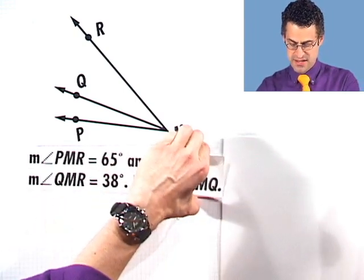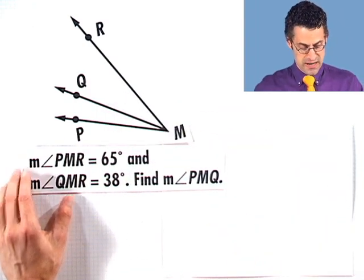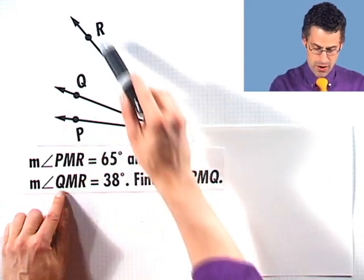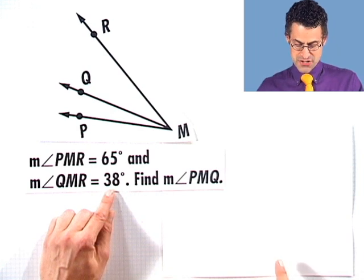So that's a piece of information we can use, this entire angle is 65 degrees in measure. The measure of angle QMR, let's see where that is, so that little wedge right there turns out to have a measure of 38 degrees.